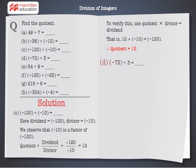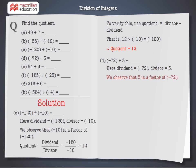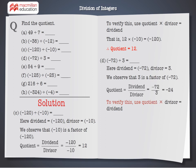D: minus 72 divided by 3. Here, dividend is equal to minus 72, divisor is equal to 3. We observe that 3 is a factor of minus 72. Quotient equals dividend divided by divisor, which is equal to minus 24. To verify: quotient multiplied by divisor equals dividend — minus 24 multiplied by 3 is equal to minus 72. Therefore, quotient is equal to minus 24.